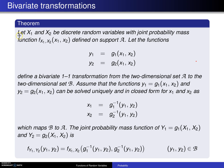Here is the theorem. Let x1 and x2 be discrete random variables — we'll consider discrete and continuous separately — with joint probability mass function f of x1, x2 defined on the support script A.